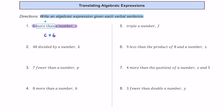For number two, we have 48 divided by a number k. So 48 is our first term and k is our second term. 'Divided by' is just what it sounds like — division from left to right. So 48 goes first, then we divide by k. Another way to write this is as a fraction: 48 in the numerator and k in the denominator, which is an equivalent expression.